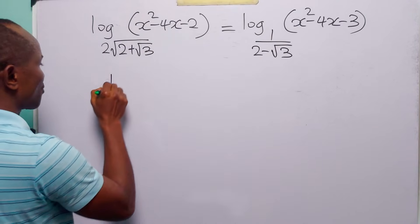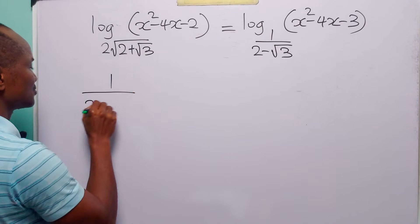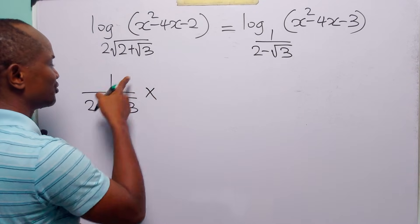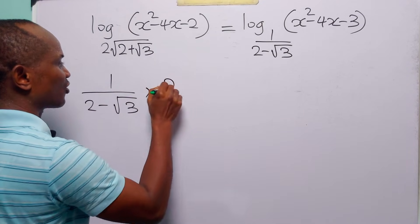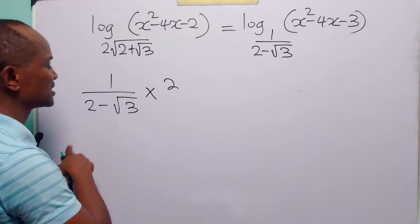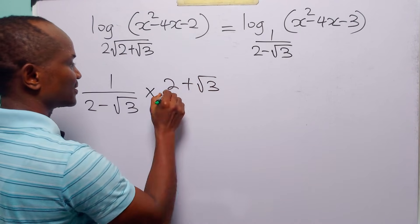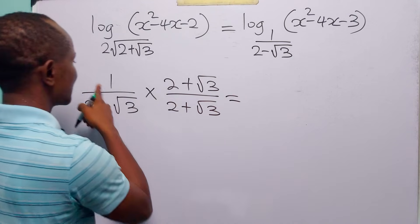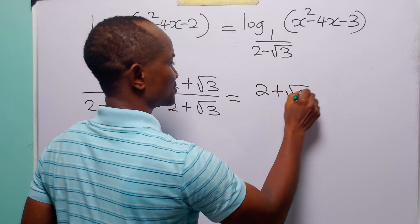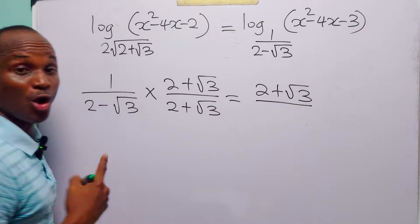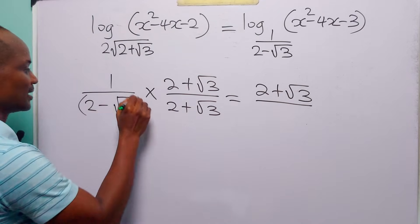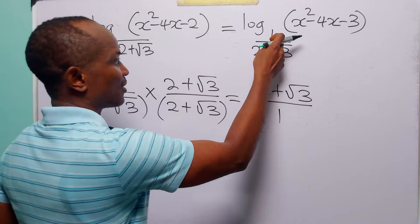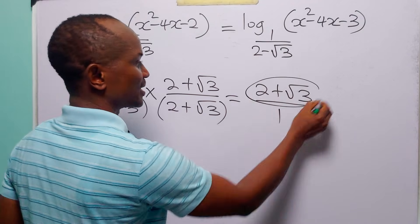For the second base we have 1 over 2 minus root 3. Once more we multiply both the numerator and the denominator by the conjugate of the denominator, which is 2 plus root 3. This gives 2 plus root 3, divided by the product of the conjugates, which is equal to 1. So we replace it with 2 plus root 3.